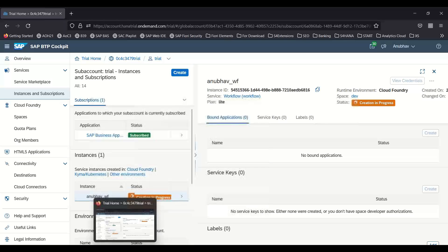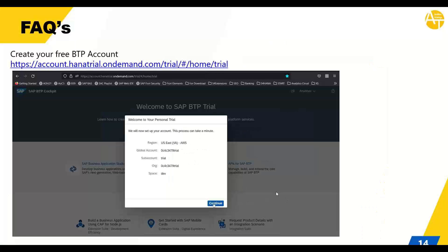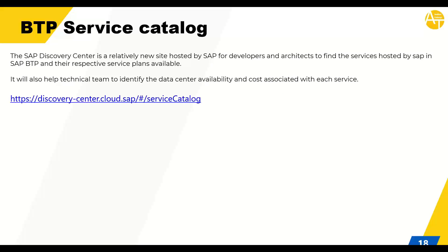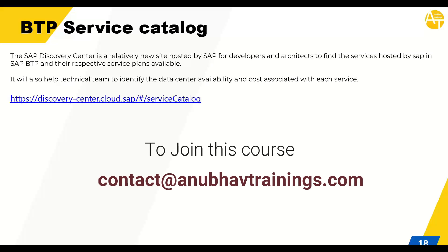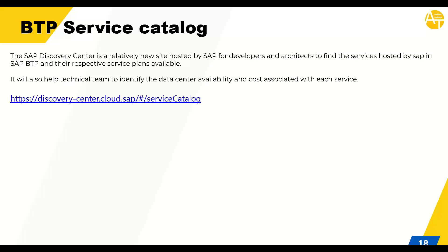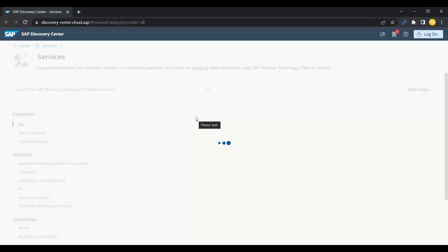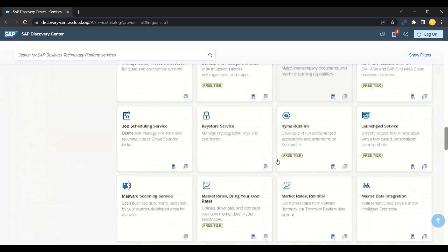That is the concept in Cloud Foundry of services and service keys. I hope everyone is clear on what is a backing service, what is a service instance, and what is a service key. Now if you want to know all the available services provided by SAP in the entire BTP, you can check them on the BTP Service Catalog. SAP Discovery Center is a relatively new site hosted by SAP for developers and architects to find services hosted by SAP in BTP and their respective service plans, data center availability, and the cost associated with each service. Here you can see all the services offered by SAP in BTP - a humongous number of services.